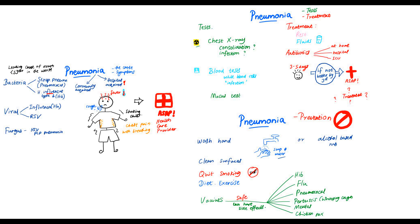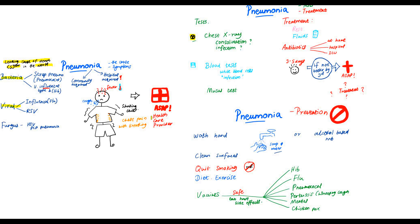Now let's summarize pneumonia. It is the leading cause of death among children worldwide and most commonly it's caused by bacteria or viruses. If you develop any symptoms it is critical to inform your healthcare provider to determine your treatment, which most likely would involve antibiotics. If you're not feeling well by the third day you must again inform the healthcare provider because they might have to change the treatment plan. We can prevent pneumonia by several methods including vaccines. And that is a brief discussion on pneumonia.